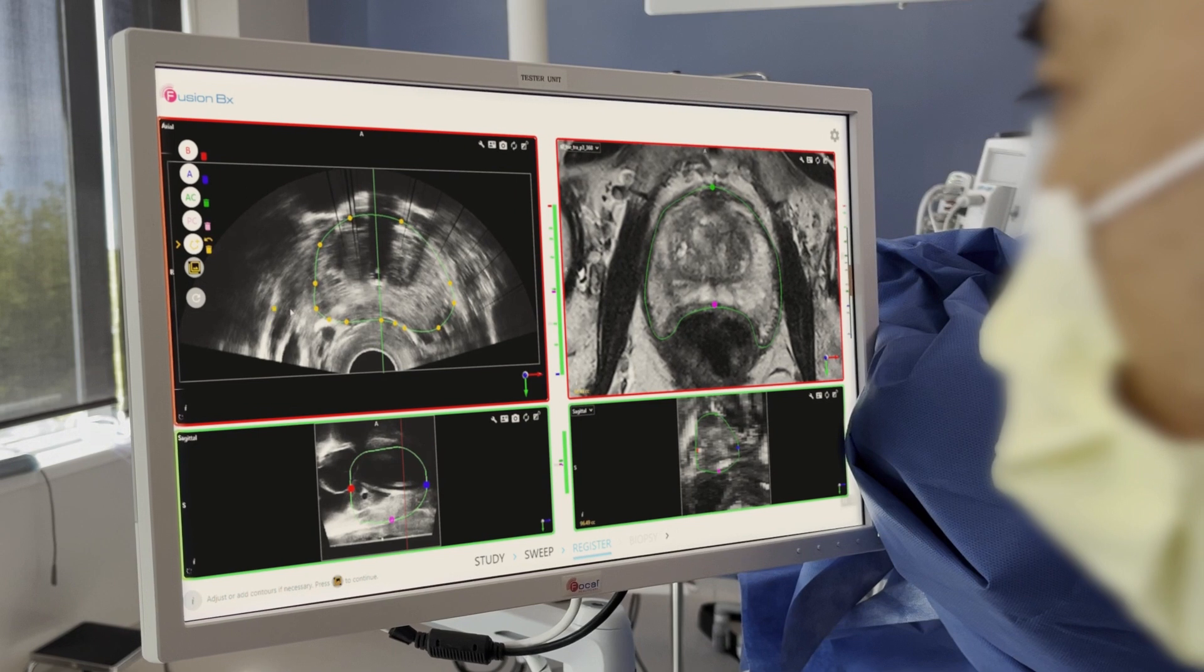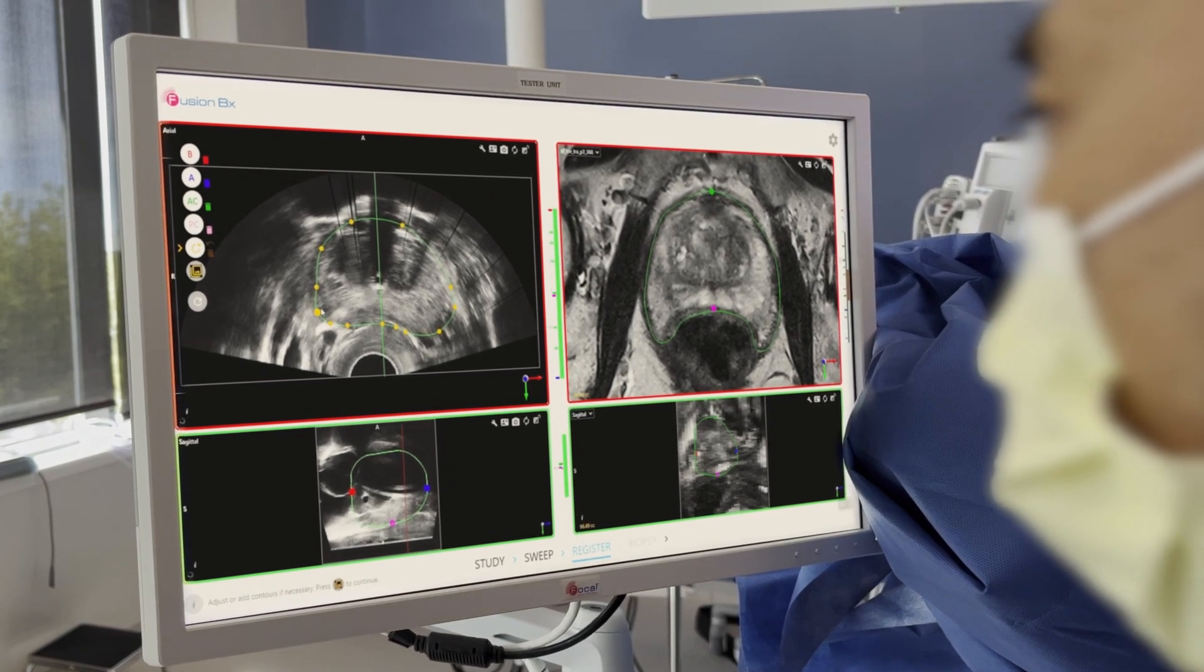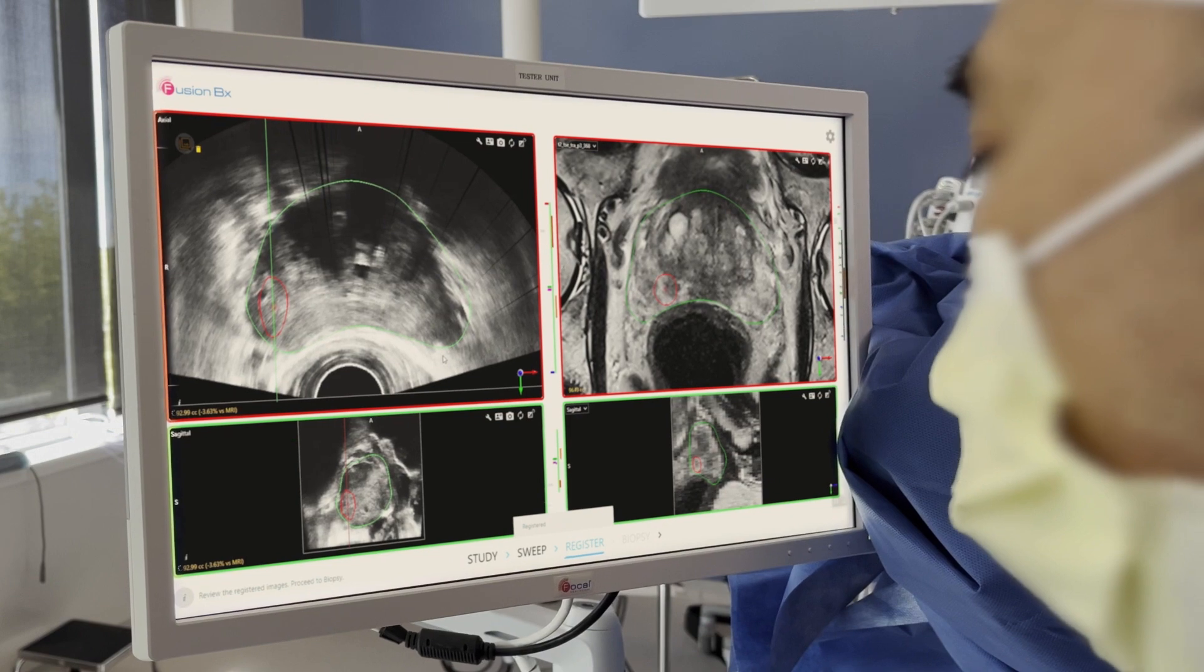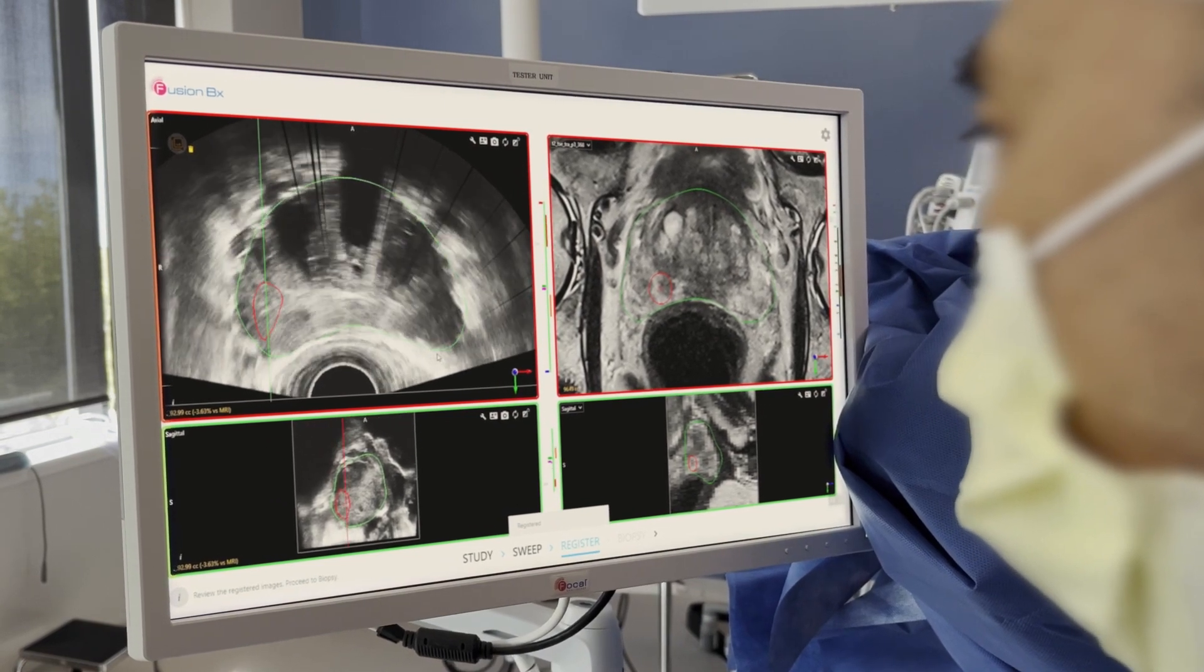Using elastic and rigid registration, the Fusion BX fuses MRI with live ultrasound to create a 3D model of the prostate along with target lesions.